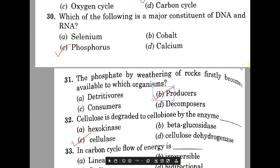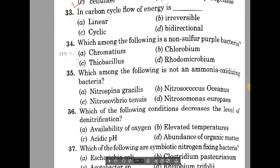Question number 33. In the carbon cycle, flow of energy is A: linear, B: irreversible, C: cyclic, D: bidirectional. Option A, linear, is correct. Energy flows in a unidirectional manner — from the sun to plants, and from plants into animals forming the food chain. Energy lost as heat cannot be reused, so the flow of energy is in a single direction. It is linear.